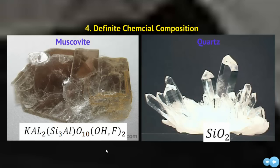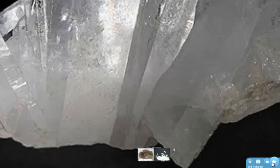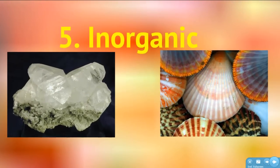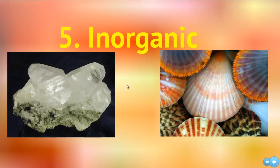The last criteria is that a mineral is inorganic. A substance that is inorganic can't ever have been alive or part of a living creature. That's why seashells and calcite mineral, although chemically identical — both calcium carbonates — are not both minerals. The calcite grew deep underground as water precipitated away; the seashell grew as part of a living creature, so it's considered organic. The calcite is a mineral; the seashell is not. The book describes it as generally inorganic because there are some ways to bend this rule, like with coal.